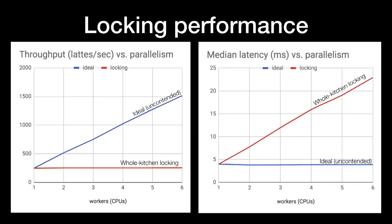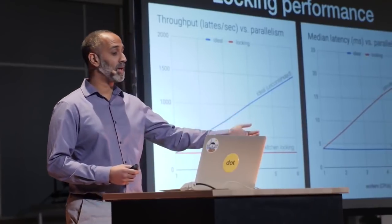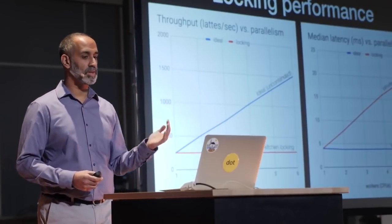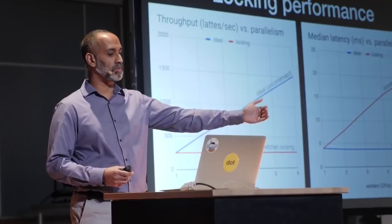When we measure this whole-kitchen locking scenario, we find the exact opposite of the ideal scenario. Throughput stays flat at 250 lattes per second, and latency grows linearly with CPUs. Because there is no way for more than one person to make a coffee at a time, each additional CPU is another person waiting in line. When the nth person joins a line, they must wait 4 milliseconds for each of the preceding n-1 people. Of course, we know we can do better than this, because we see better in the real world.